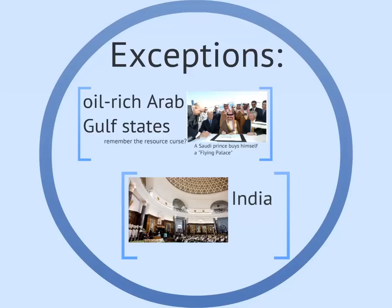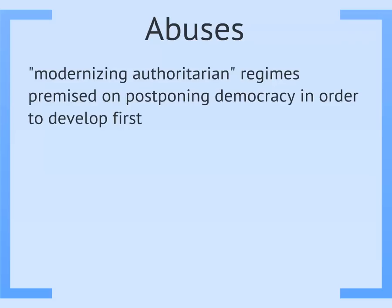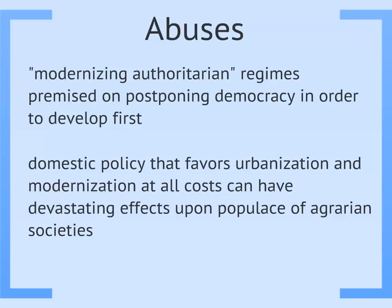Another exception is India, which is the world's most populous democracy but is also a relatively poor country. Additionally, modernization theory has been abused by real-world policymakers. There is an entire category of dictatorship called modernizing authoritarianism, in which the leadership argues that a country is too poor and not ready for democracy, using this to legitimize their rule. This theory has also encouraged misguided attempts to make all countries look like the West — a one-size-fits-all emphasis on urbanization, industrialization, and westernization that has had damaging effects upon the rural farmers who make up huge portions of the population in most of the developing world.